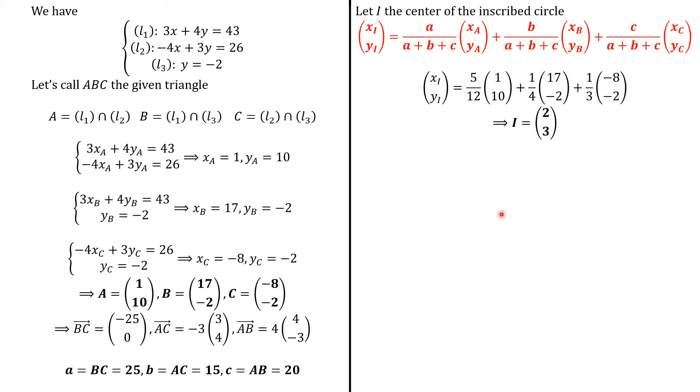Next, we need to know also the radius of this circle. We use this formula because r is going to be the distance between I and the line L3, or L2 or L1. But here, we choose L3 because it is even faster to compute.